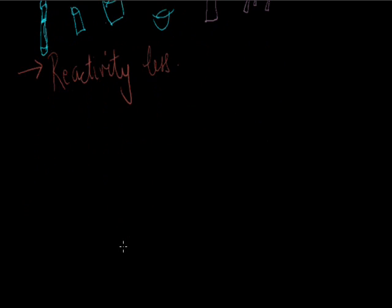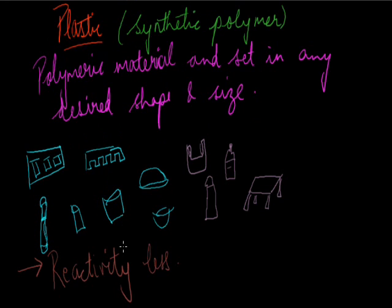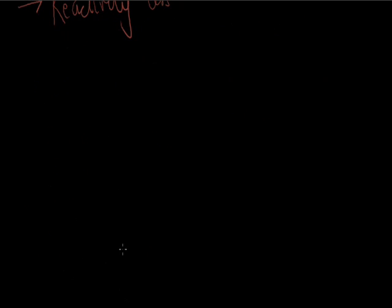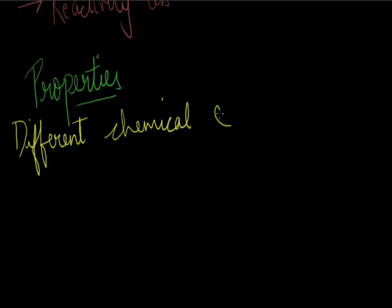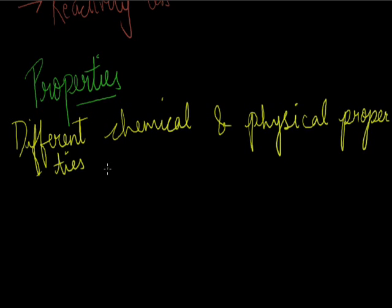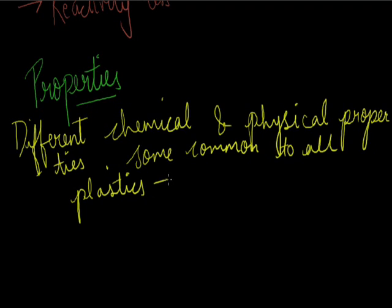There are some properties due to which we use different plastic materials in our house. Plastics have become so important that we are now trying to find such plastic which can be used without causing pollution. So first we will see the plastic properties, and then we will deal with what we should do to prevent the pollution caused by them. The properties of plastics are different — there are different chemical and physical properties of different types of plastic, but some properties are common to all.